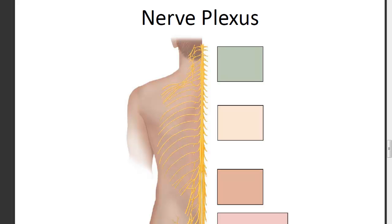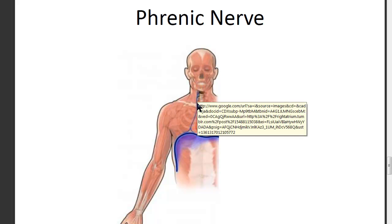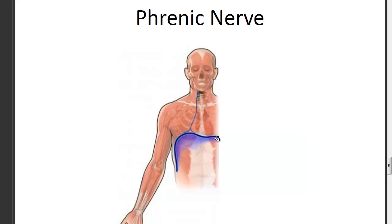The phrenic nerve comes off the cervical plexus in the neck and stimulates the diaphragm. To remember this, think: phrenic and diaphragm both share the letters P-H-R. There's a pair of phrenic nerves — one on each side to serve each side of the diaphragm — and this is important for breathing. When the diaphragm is stimulated, it contracts and moves down, allowing the lungs to expand, and inhalation follows.